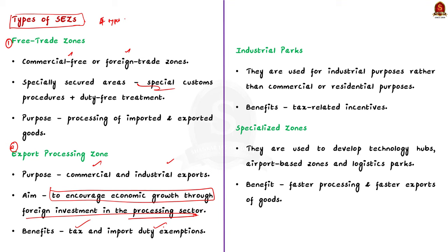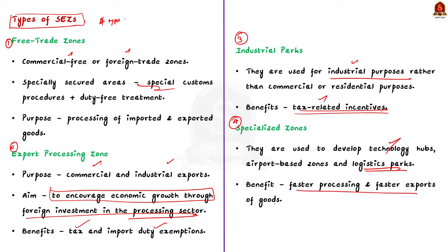Industrial Parks are designed to be used for industrial purposes rather than commercial or residential purposes. These areas offer certain tax-related incentives for people who intend to use them. Specialized Zones are used to develop technology hubs, airport-based zones, and logistics parks. All these will help in faster processing and faster export of goods.